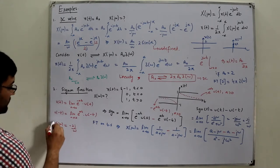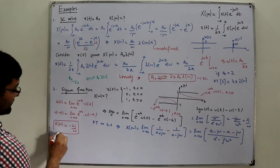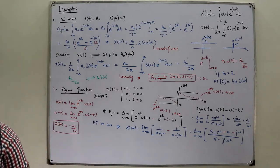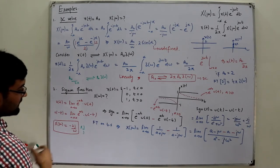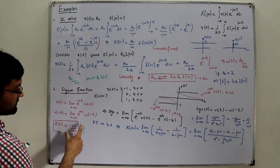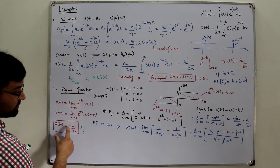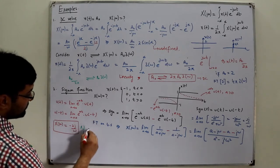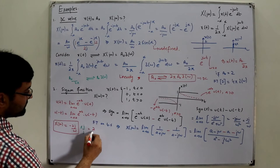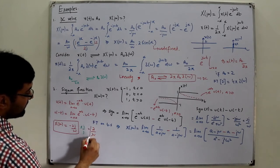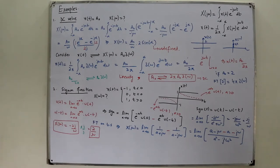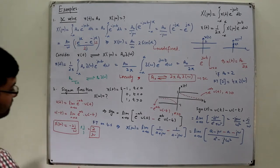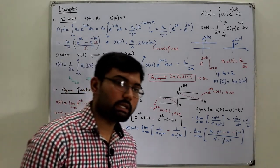So the Fourier transform for the signum function is −2J/ω. We can also write it in another form: multiplying and dividing by J gives J² = −1 in the numerator, so negatives cancel and we get positive 2/Jω. The form 2/(Jω) is more frequently used.